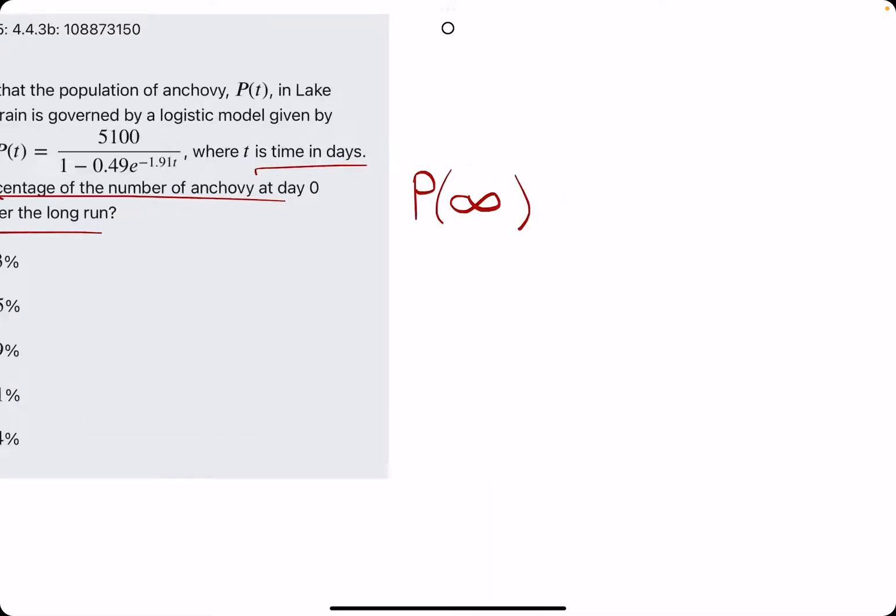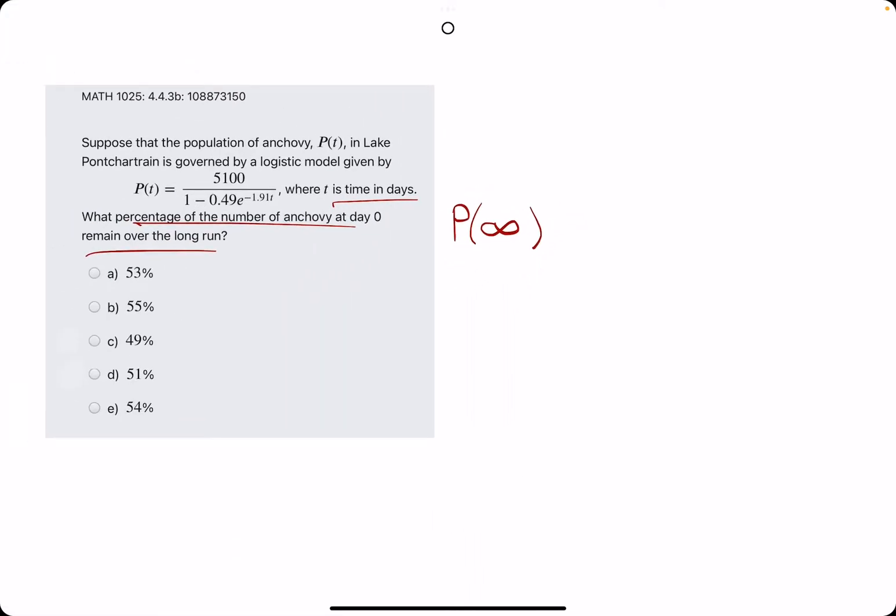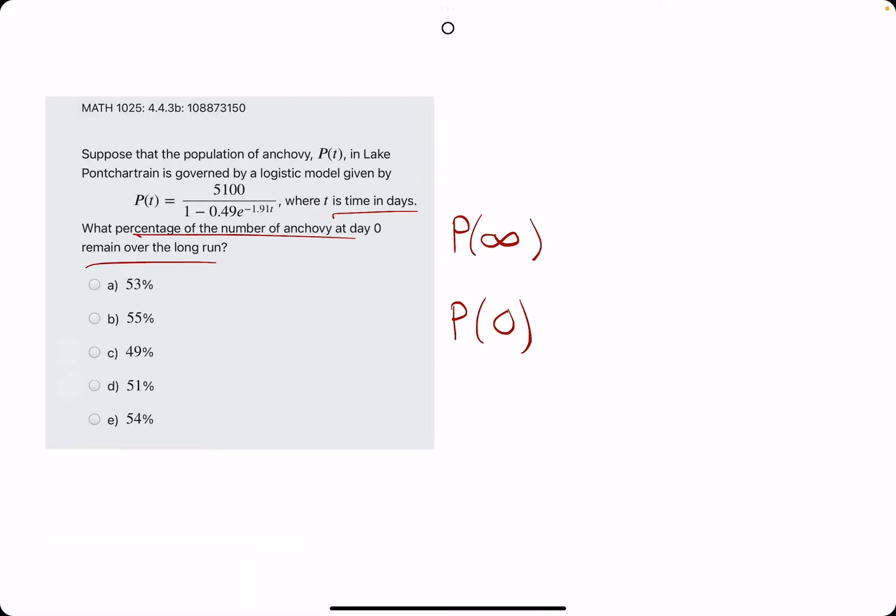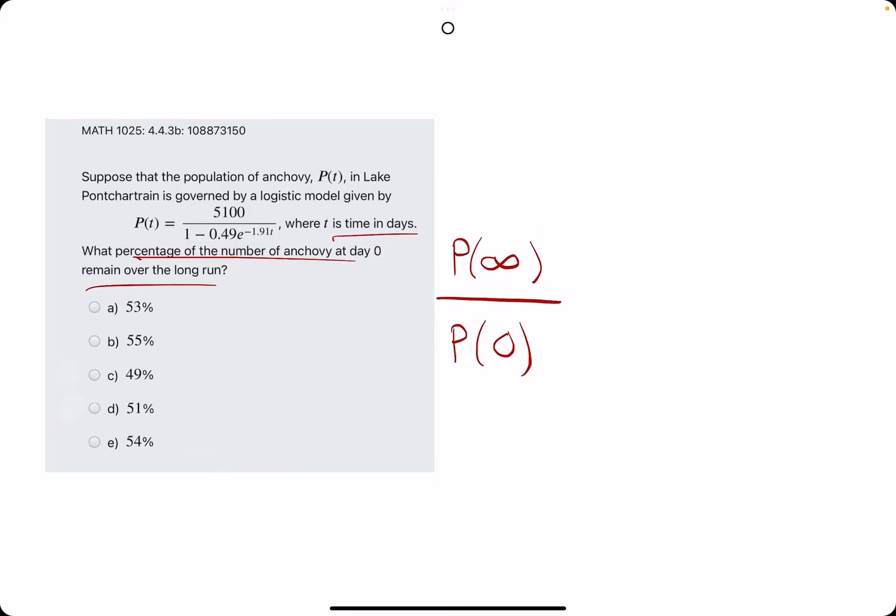Over the long run sort of means if we evaluate the population as t is approaching infinity, what does the population equal in the long run, in the end, or as t goes to infinity? And so, we'd find the population at day zero, population at infinity, and then actually divide the population at infinity by the population at zero. And that sort of gives you the percentage of fish that were at day zero that are remaining over the long run.